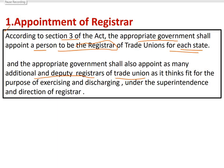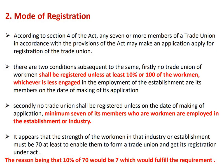तो हमारा पहला procedure है appointment of registrar। यह registrar appropriate government appoint करती है — appropriate government shall appoint a person as registrar, और यह हर एक state के लिए होता है जहाँ registration office होता है। साथ में appropriate government को power है additional या deputy registrar भी appoint करने का।